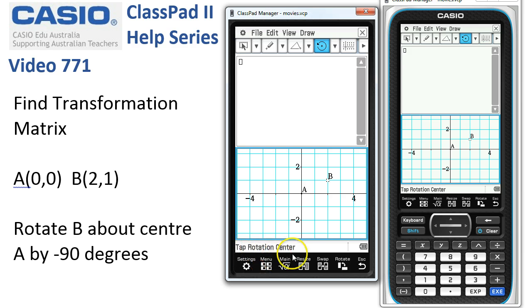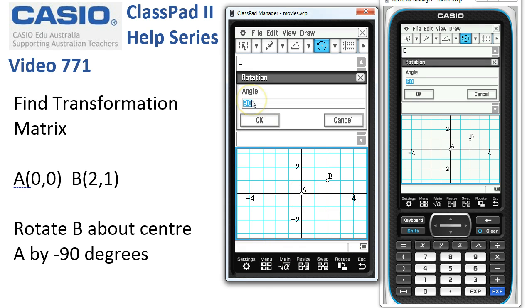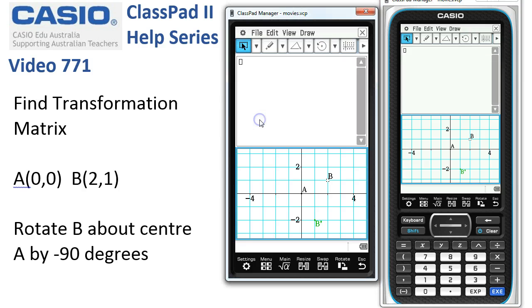ClassPad is saying in the information box at the bottom of the screen to tap the rotation center, which is A. So I'll tap onto A and it's asking us what angle. We want to rotate by negative 90 and that's set. That's basically clockwise. You can see here it's been rotated clockwise 90 degrees to its new position.